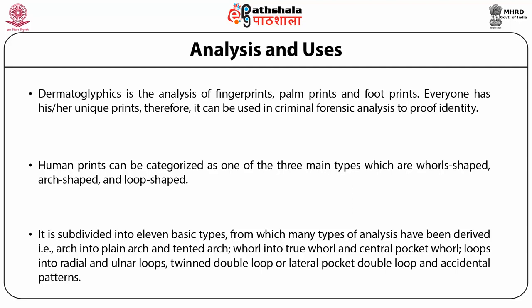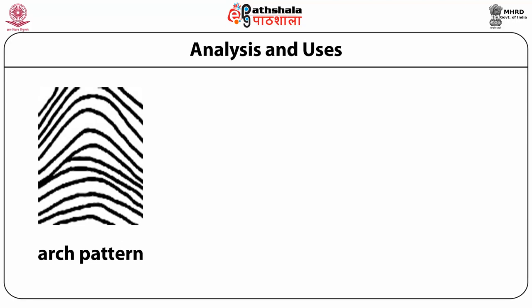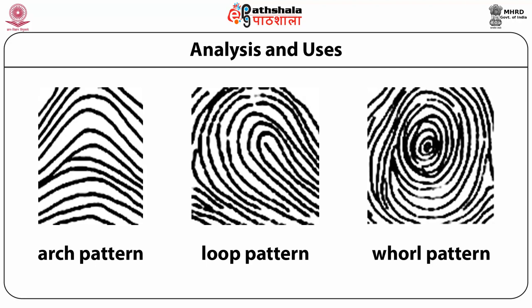It is important to note that the pattern W-H-O-R-L-S is pronounced as 'whorl.' When looking at the three main patterns: the arch pattern has no tri-radius; in the loop pattern, there is one tri-radius visible on the left side; and in the whorl pattern, there are two tri-radii on the right and left sides, which makes it a whorl.